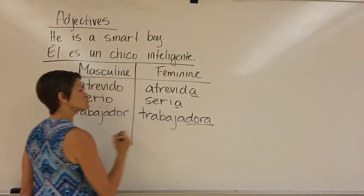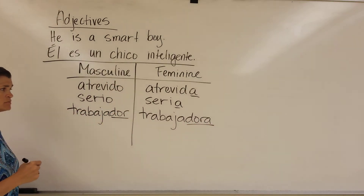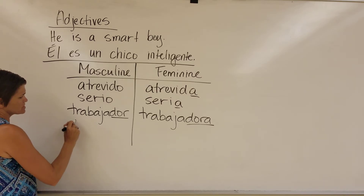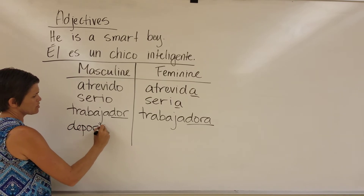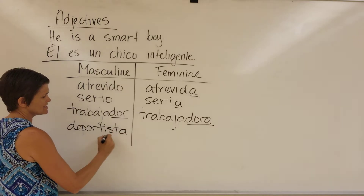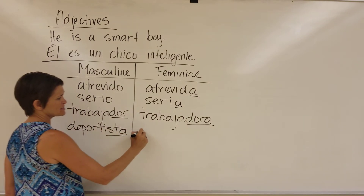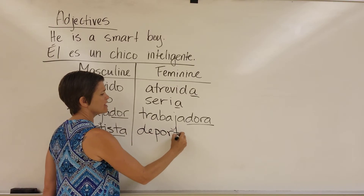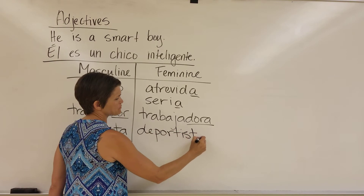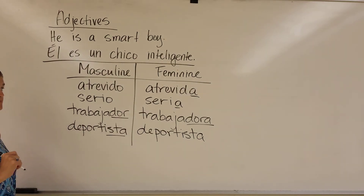She's hard working — it ends with '-dora' instead of '-dor.' Then there's the word 'deportista' that breaks all the rules, because it ends in '-ista.' So it ends with an A even though it's masculine, and both the masculine and feminine forms are exactly the same — no change.